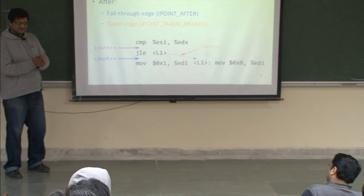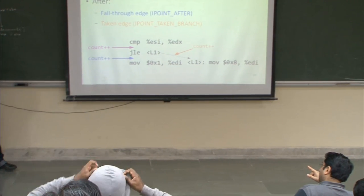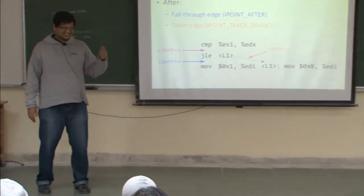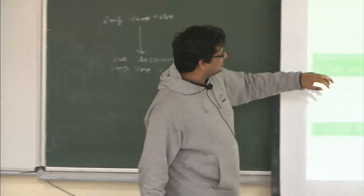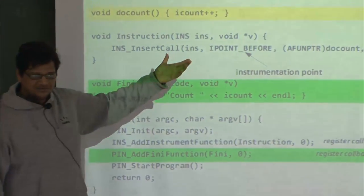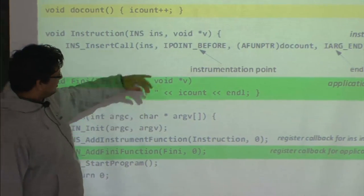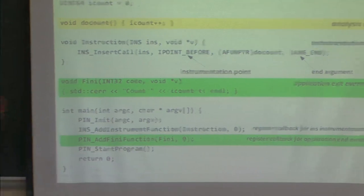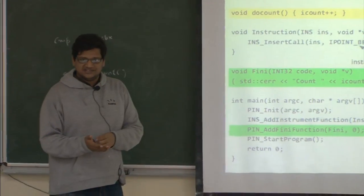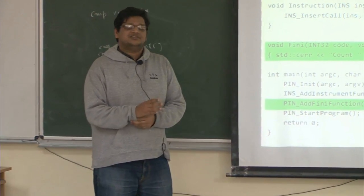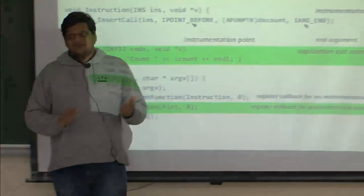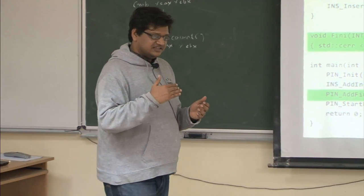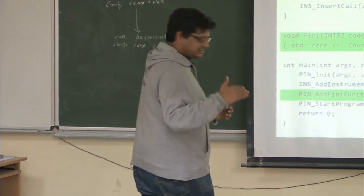If you give only IPOINT_AFTER, the counter increment won't be executed when a conditional branch is taken. To count all instructions correctly, you would need to specify both IPOINT_AFTER and IPOINT_TAKEN_BRANCH. This won't cause double-counting for non-branch instructions since the taken-branch path doesn't exist for them.